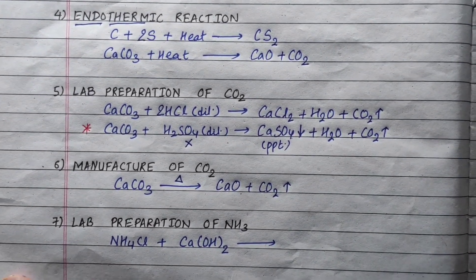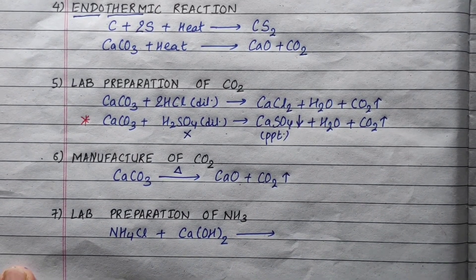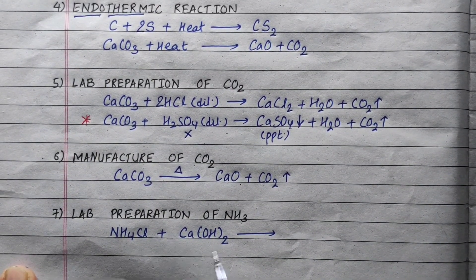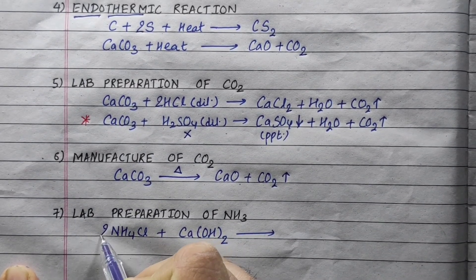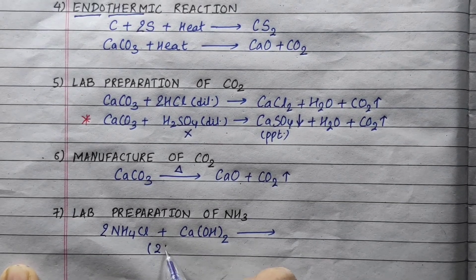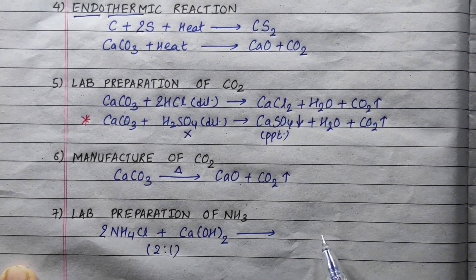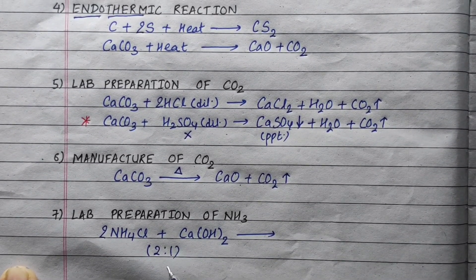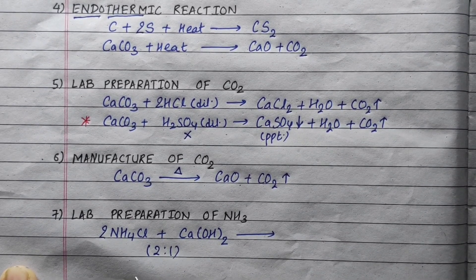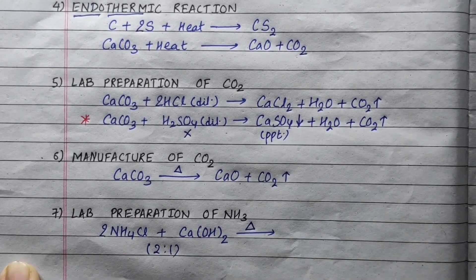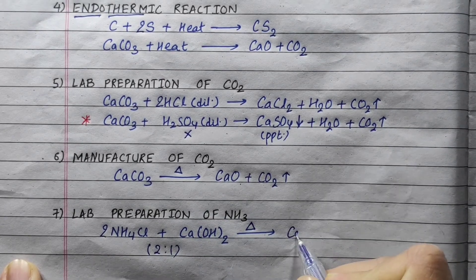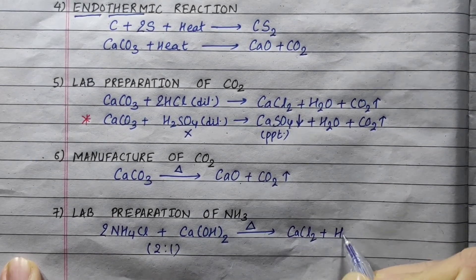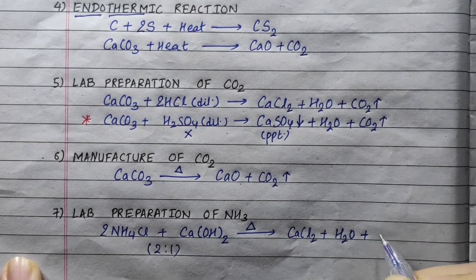Now, the lab preparation of ammonia. We use ammonium chloride and calcium hydroxide in a 2 to 1 ratio. We heat the mixture. The products are: salt — calcium chloride — water, and ammonia gas.